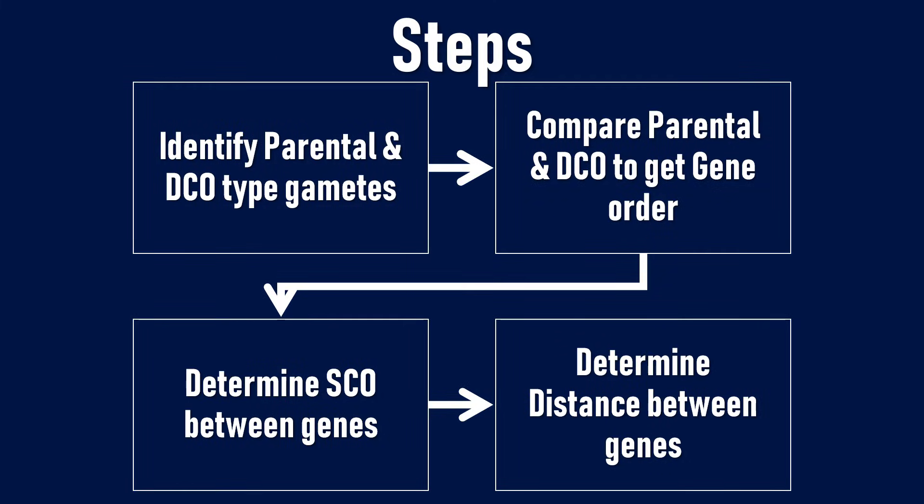To summarize: we first need to identify the parental and the double crossover type gametes. The parental type have the highest number of progenies and the double crossover type have the lowest. Then, we compare the parental and the double crossover type to find one uncommon gene, which is placed in the center to get the gene order. Next, we determine the single crossover genes by crossing over, and finally we determine the distance between the genes using the formula.